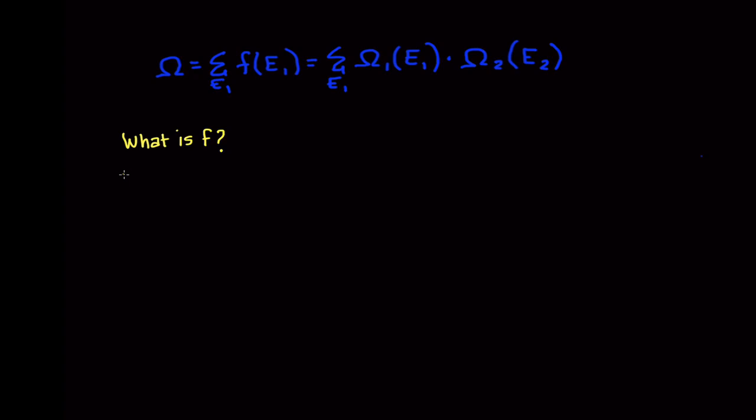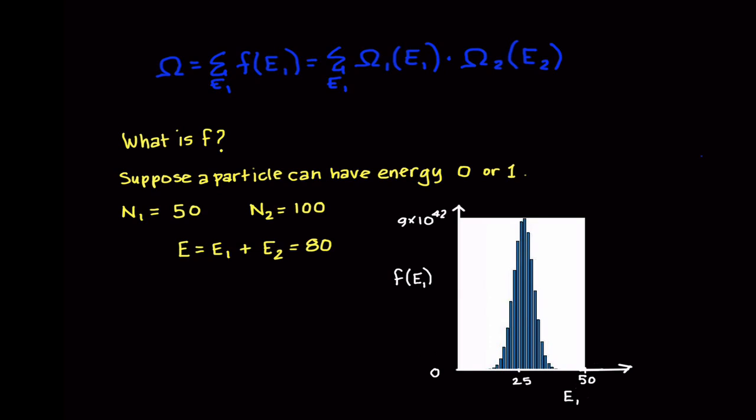We can explore the function F by considering a simple case where each particle can only exist in one of two allowable energy states, one with energy zero and the other with one. Suppose I have 50 particles in box 1 and 100 particles in box 2 and the total energy of the system is fixed at 80. In order to reach this total energy, the energy E1 in box 1 can range from zero to 50.